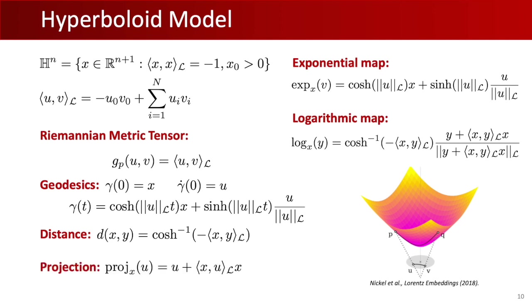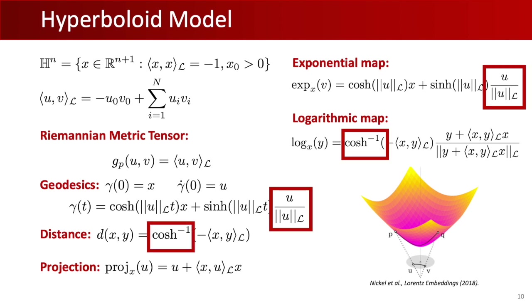We can also project points in R^(n+1) onto the tangent space by renormalizing them using the Lorentzian product, and after this projection any point becomes mapped onto the correct tangent space. These projections are useful in practice for Riemannian optimization and to avoid numerical instabilities. The hyperboloid model is considered more numerically stable compared to other models such as the Poincaré model, making it a good candidate for optimization. However, some functions may still cause instabilities, so it's important to use clamping tricks in implementation to avoid NaNs during optimization.